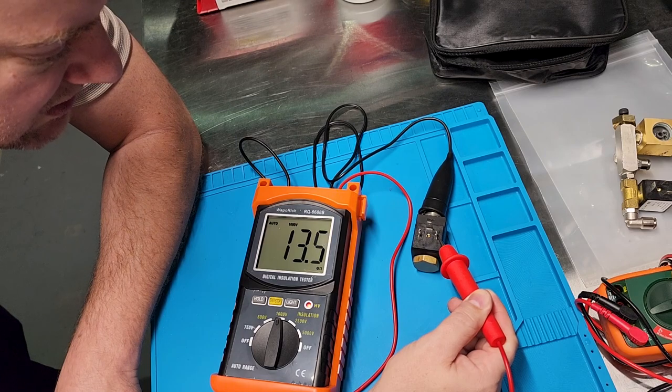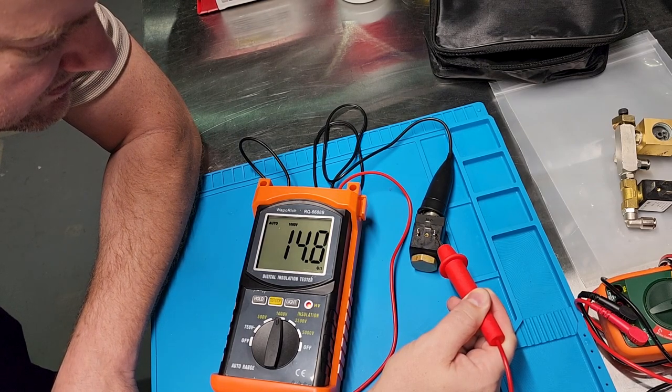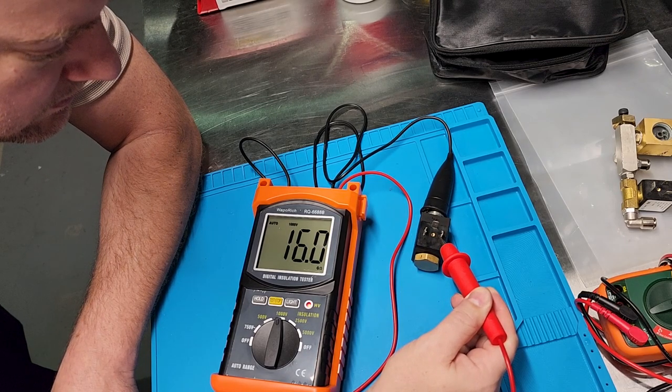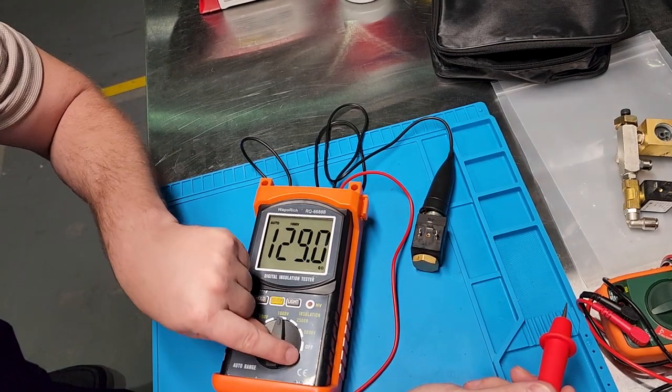Notice how the numbers are much lower and they're not going up very quickly. It's a little suspicious. All right, so at 1,000 volts we don't have very much.